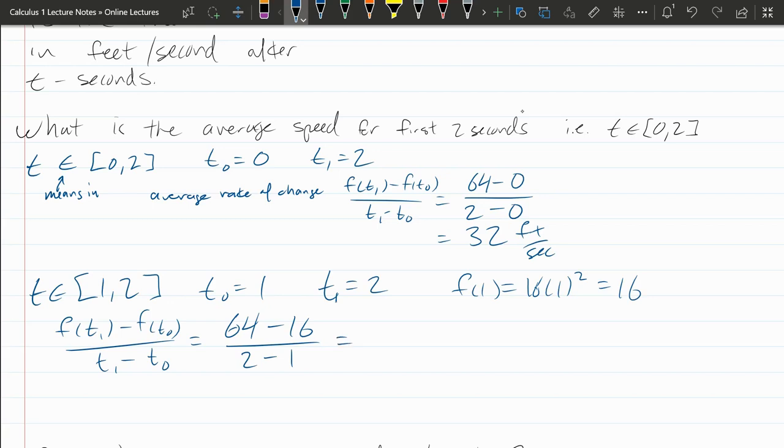t1 is now 2 and t0 is 1. 64 minus 16 is 48. Divided by 2 minus 1 is 1. So we get 48.